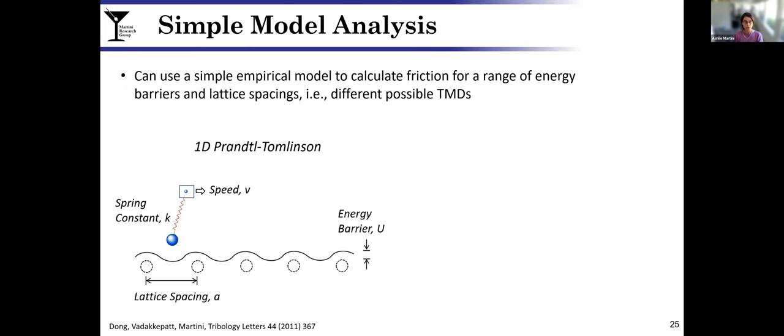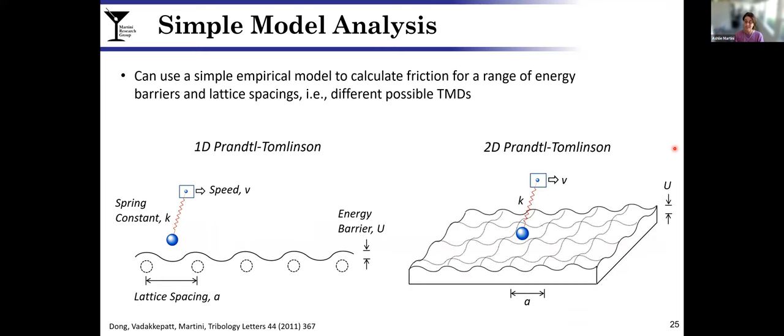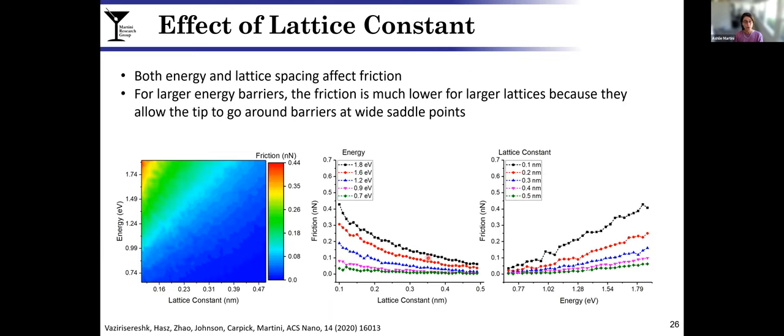To generalize these results, we used a Prandtl-Tomlinson model. This was mentioned in an earlier presentation today. This is mimicking an AFM with a point mass connected by a spring to this moving point and energy barrier with height U and lattice spacing a. Because we're looking for sort of two-dimensional paths for the tip to move, we used a two-dimensional PT model that we developed previously.